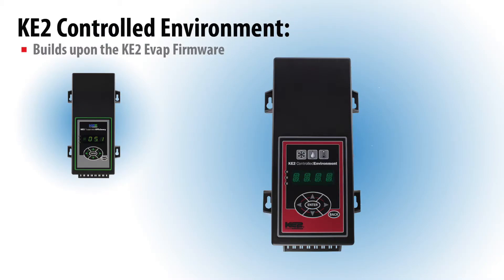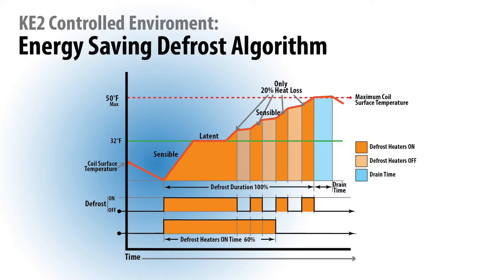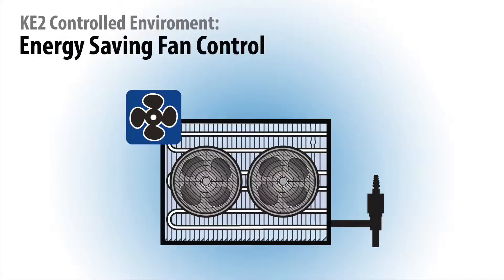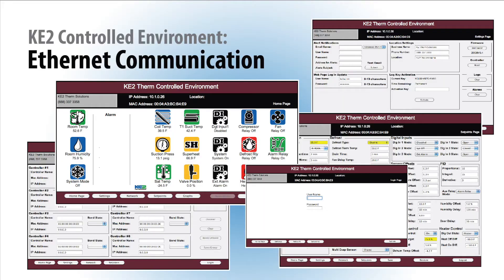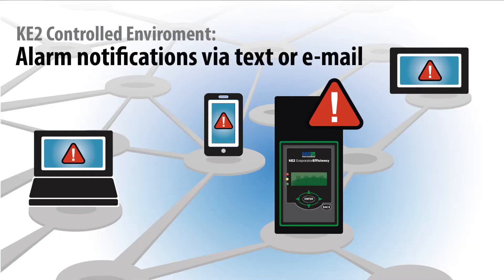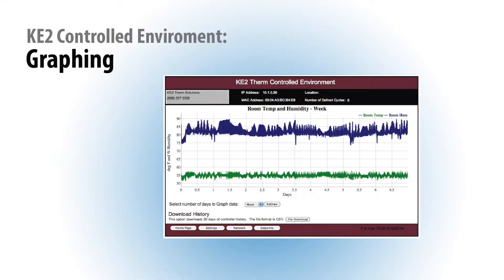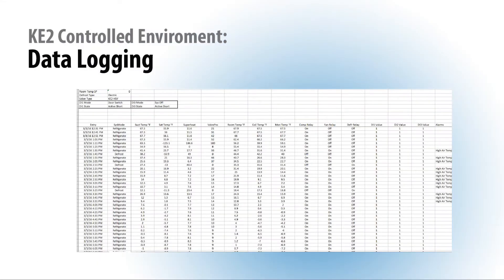The firmware for the Key2 Controlled Environment builds off the Key2 evaporator efficiencies, energy-saving defrost, and it includes the same fan management features, Ethernet communications, alarm notifications via text or email, graphing, and data logging.